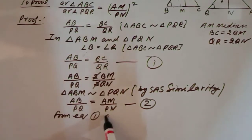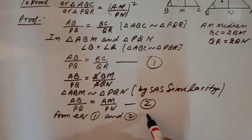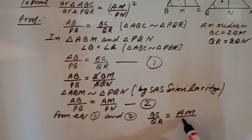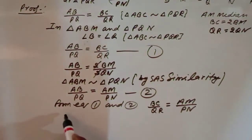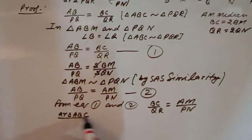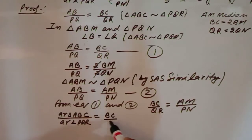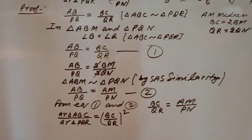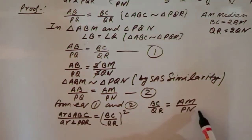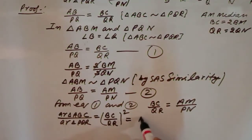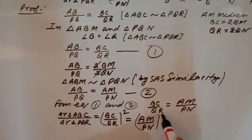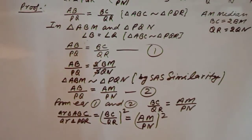From equations one and two: BC/QR = AM/PN. Now we know that area of triangle ABC / area of triangle PQR = (BC/QR)². Since the two triangles are similar, the ratio of their areas equals the square of the ratio of their corresponding sides. We have proved that BC/QR = AM/PN, so substituting: area of △ABC / area of △PQR = (AM/PN)². This is exactly what the question asked us to prove.